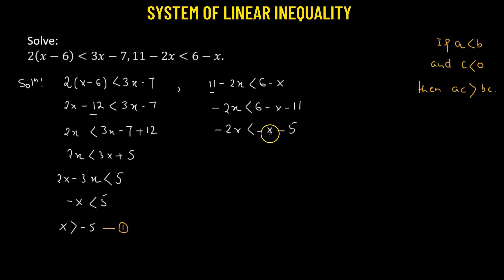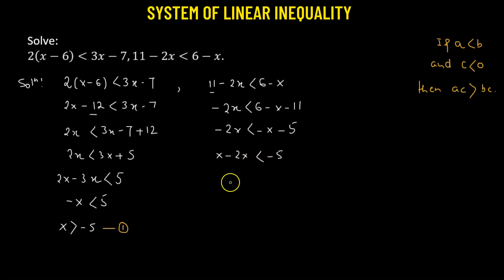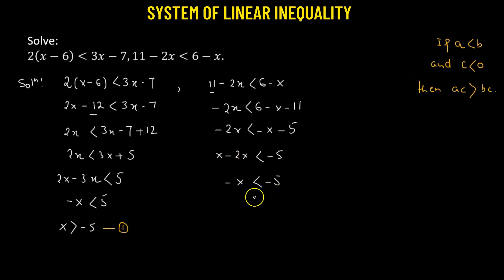We transpose negative x to the left hand side to get x minus 2x less than negative 5, so negative x less than negative 5. We multiply both sides by negative 1, applying the same property, to get x greater than positive 5. Let this be number 2.